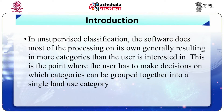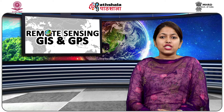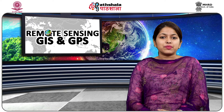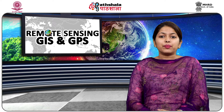In unsupervised classification, the software does most of the processing on its own, generally resulting in more categories than the user is interested in. This is the point where the user has to make decisions on which categories can be grouped together into a single land use category. Additional image processing may be used to determine which method is better for a given situation. It must be kept in mind that maps are simple attempts to represent what actually exists in the world and are never completely accurate.